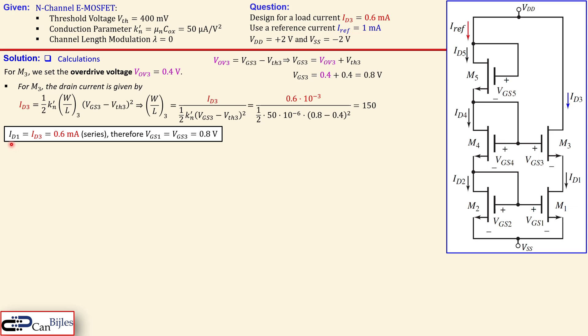Now this ID1 which is this current is equal to ID3. Why? Because the gate currents are all zero so this drain current for M3 will be exact same as the ID1. And they're in series so they have the same result which is then 0.6 milliamps and that results that the VGS1 is also VGS3 because in order to have the same current you also need to have the same gate to source voltage.